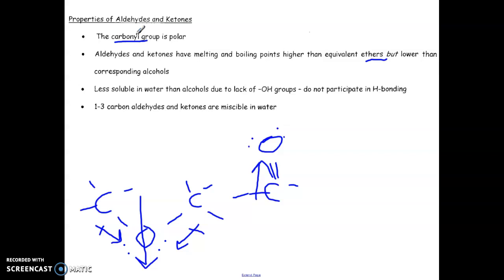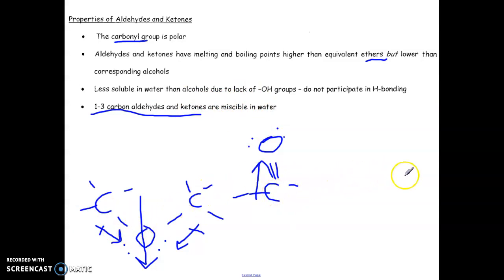Neither aldehydes nor ketones come close to alcohols because there's no hydrogen bonding. In terms of comparing aldehydes to ketones with each other, they're pretty much on par — melting points of equivalent-size aldehydes and ketones differ by less than five degrees. So I would classify them in the same category. Small aldehydes and ketones of one to three carbons are soluble (miscible) in water. As you get into larger carbon chains, the carbonyl group's polar influence diminishes and the molecule starts to behave more non-polar.